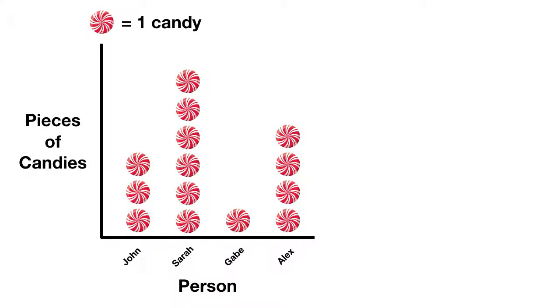In this graph, four friends, John, Sarah, Gabe, and Alex, went out to collect candy. The number of pieces of candy they collected are shown on the graph.